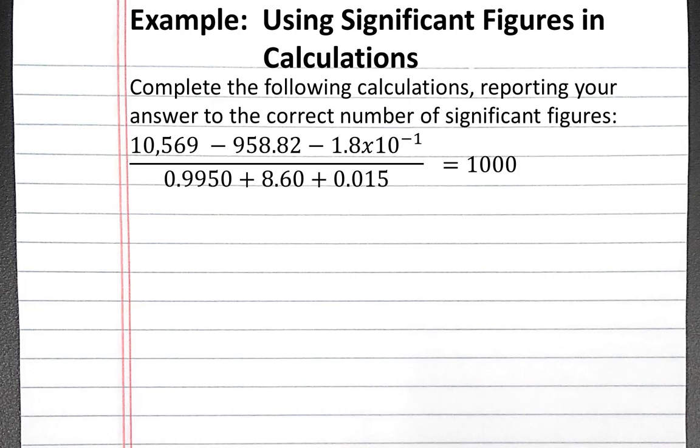Following order of operations, the first thing we'll want to do is determine how many significant figures are in the numerator. Whenever I do addition or subtraction, I like to line up all of the numbers with respect to their decimal points. This makes it easier to keep track of the significant figures in the calculation.